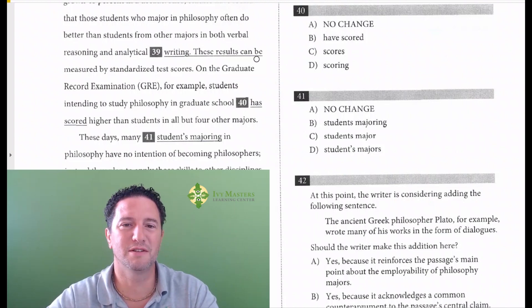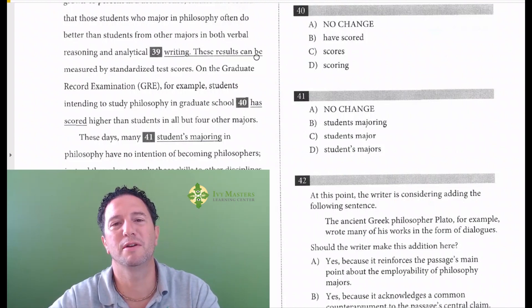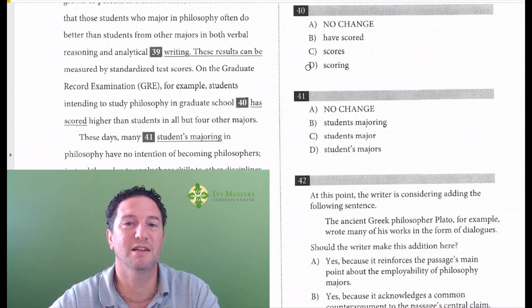There's two things to check when a verb is underlined. My name is Paul Fisoka, Ivy Masters Learning Center at ivmasters.com. Today we're going to look at Test 1, Section 2, number 40, which reads: